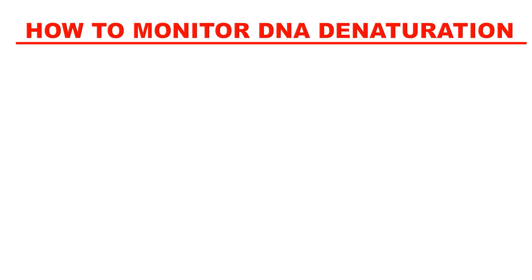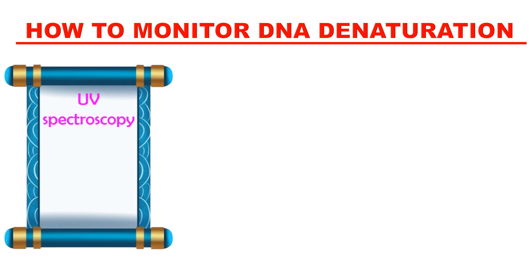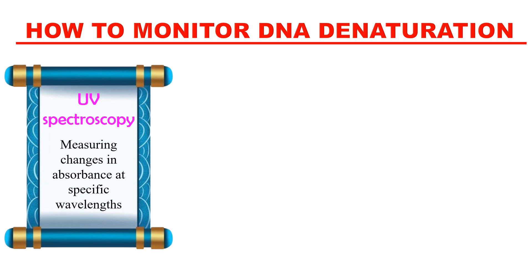Next, how we can monitor DNA denaturation. One method is UV spectroscopy — we measure changes in absorbance at a specific wavelength. Due to DNA denaturation, absorbance increases because the two separated strands have exposed bases that absorb light much more than compact double-stranded DNA.